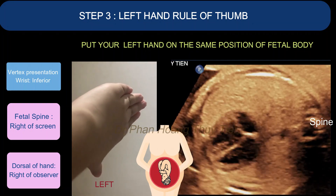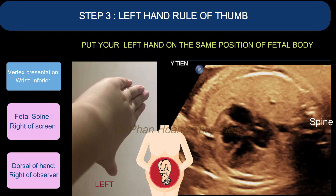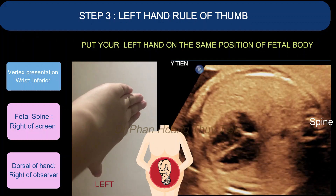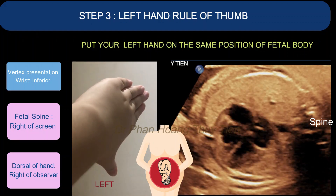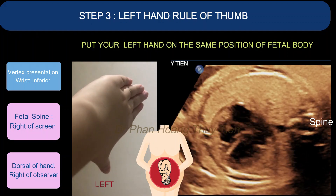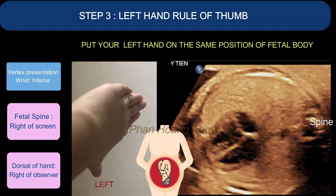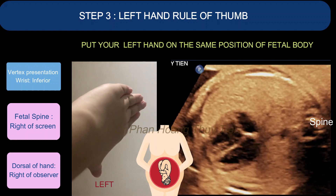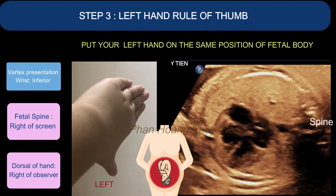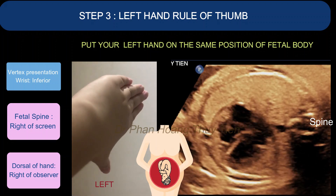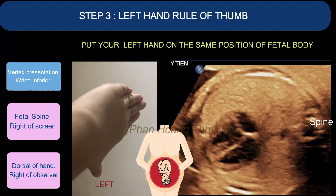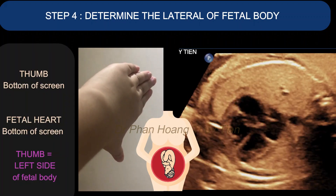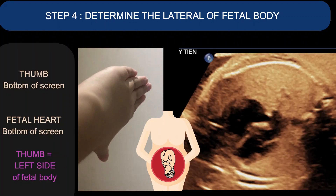Reminder that this is a vertex presentation — the wrist, which is the fetal head, will be inferior to the fingers, while the fetal spine is positioned on the right side of the screen, which makes your hand's dorsal face point in the right direction.